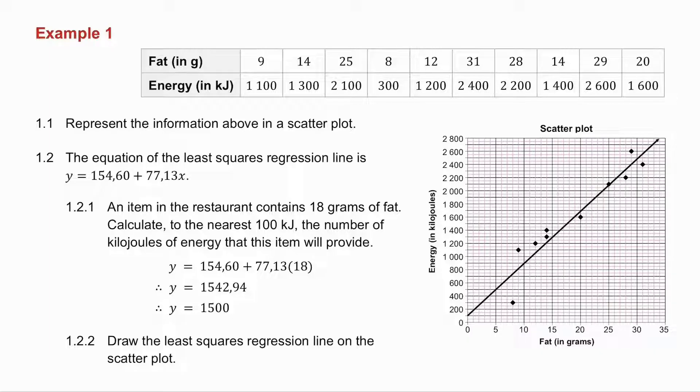They then say to you, the equation of the least squares regression line is given by that. And they say to you, an item in the restaurant contains 18 grams of fat. Calculate to the nearest 100 kilojoules the number of kilojoules of energy that this item will provide. So I use the equation of the least squares regression line they've given me, and in place of X, I put 18. And I get my Y value. Now they asked me to the nearest 100 kilojoules, so I need to round that off.